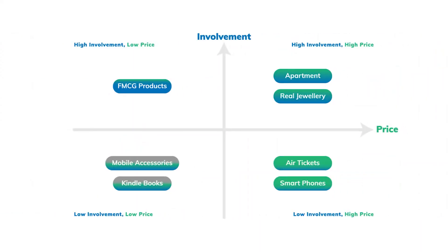Let's look at quadrant 4 — high price but low involvement. A typical example is a flight ticket: high price but low involvement because the product is largely standardized. Hence, what I need here is to measure conversion as a metric. For conversion, I need both reach and frequency — reach to the target audience, because people who can afford a high price product is a smaller group.